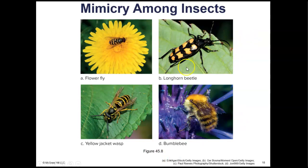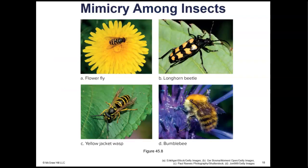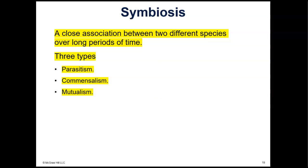The longhorn beetle is also likely a Batesian mimic because it doesn't sting. In Batesian mimicry, the mimic resembles another species but lacks its defense; in Mullerian mimicry, both species share the same defense. Next we'll cover symbiosis — a close association between two different species over long periods of time, in which they can even co-evolve. The three types are parasitism, commensalism, and mutualism.